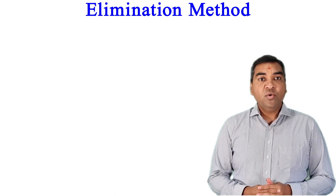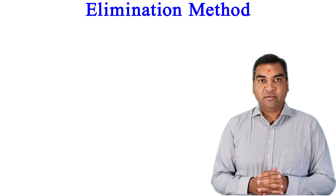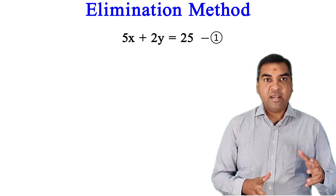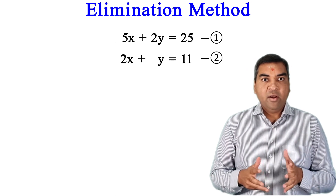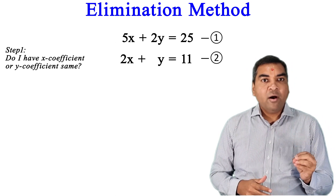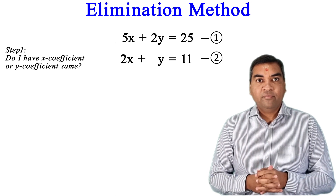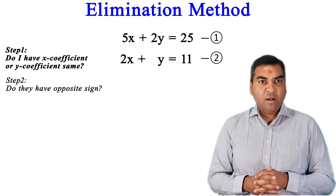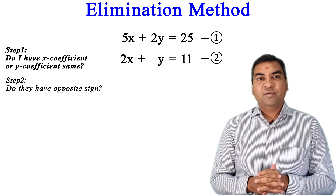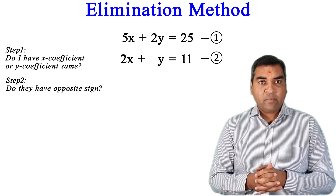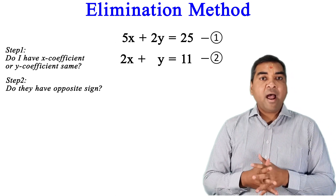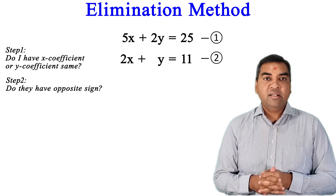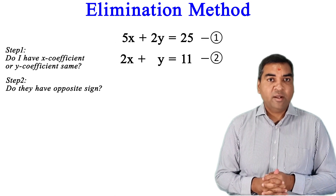Now the third kind of question. My equations are 5x + 2y = 25 and 2x + y = 11. Asking question one: are any coefficients the same? The x coefficients are 5 and 2, and the y coefficients are 2 and 1 — none are the same. So I need to make one set of coefficients equal by multiplying an equation by a number.